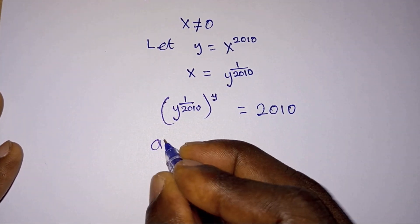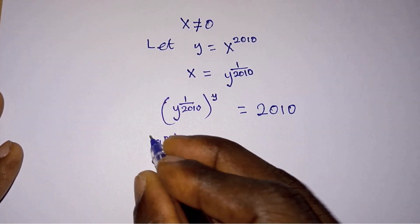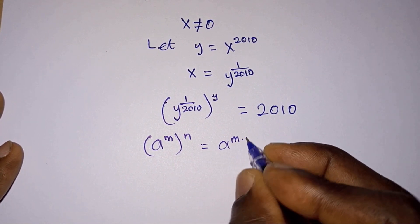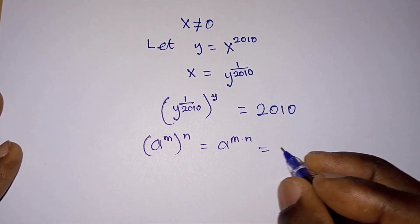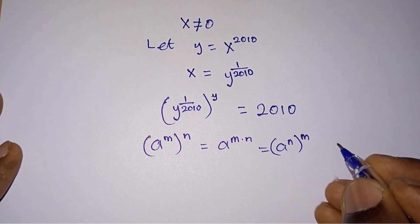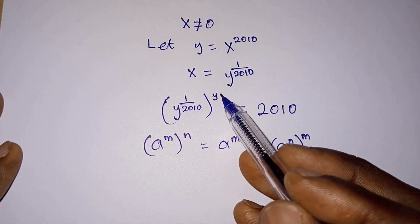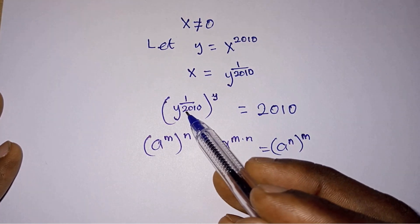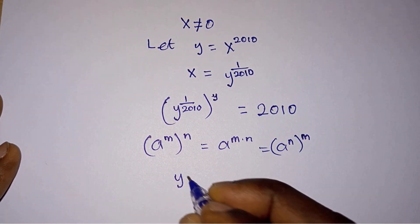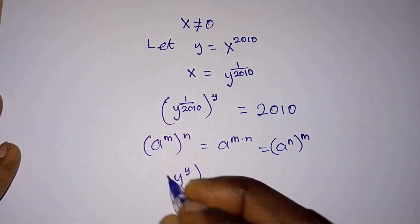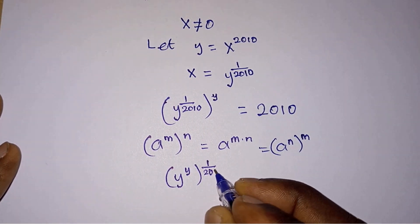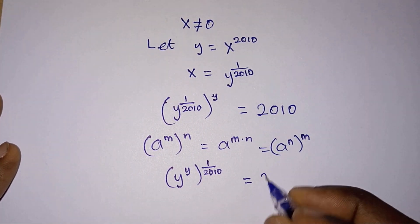So we have y over here and this is equal to 2010. From here we will apply a power rule which says that a to the power m or to the power n is equal to a to the power m times n, and it is also the same as a to the power n or to the power m. So from this we can interchange the position of 1 over 2010 and then y, so we have y to the power y or to the power 1 divided by 2010 is equal to 2010.